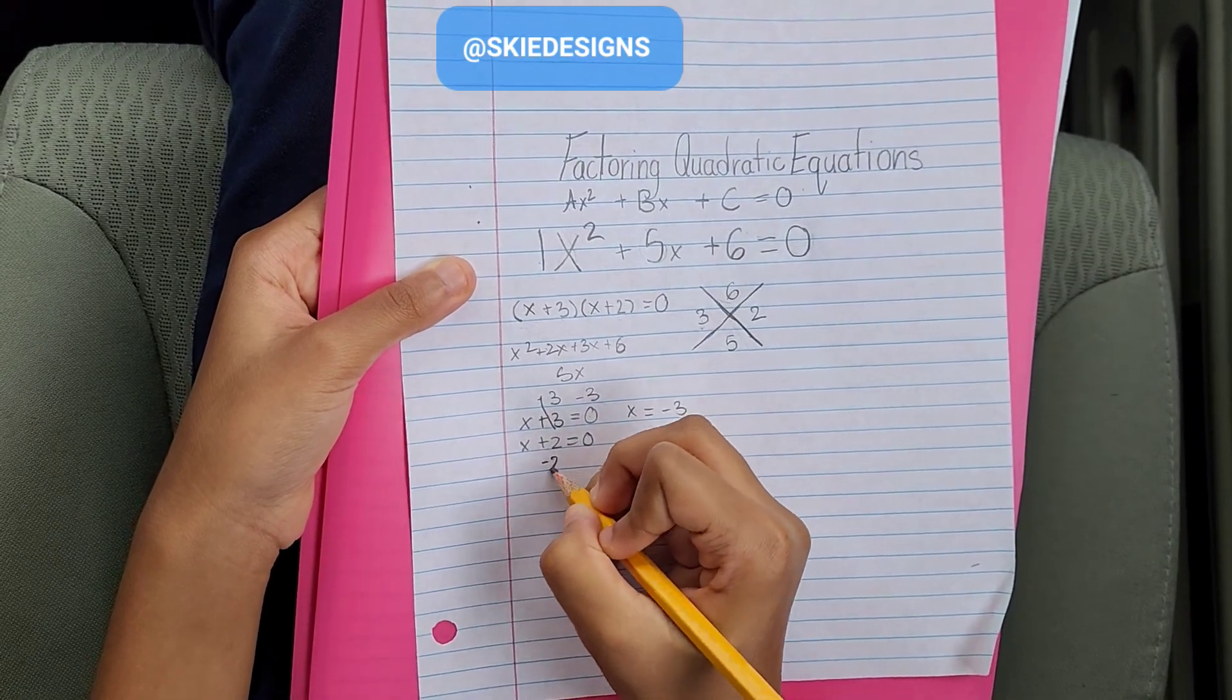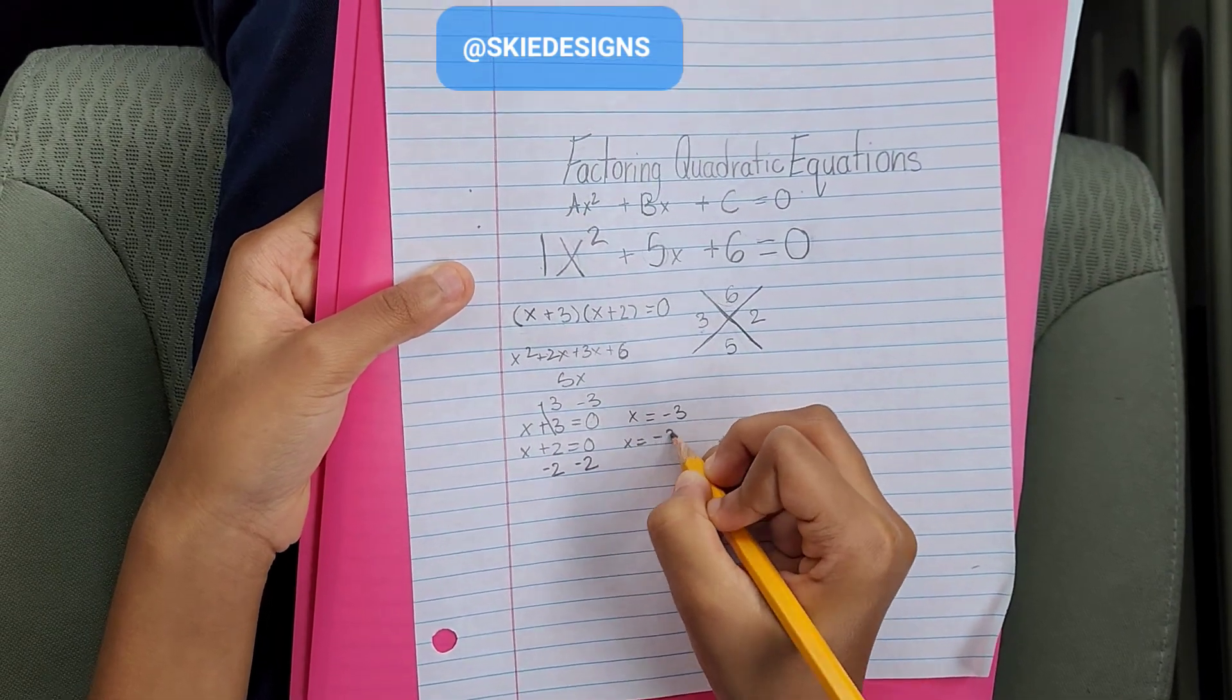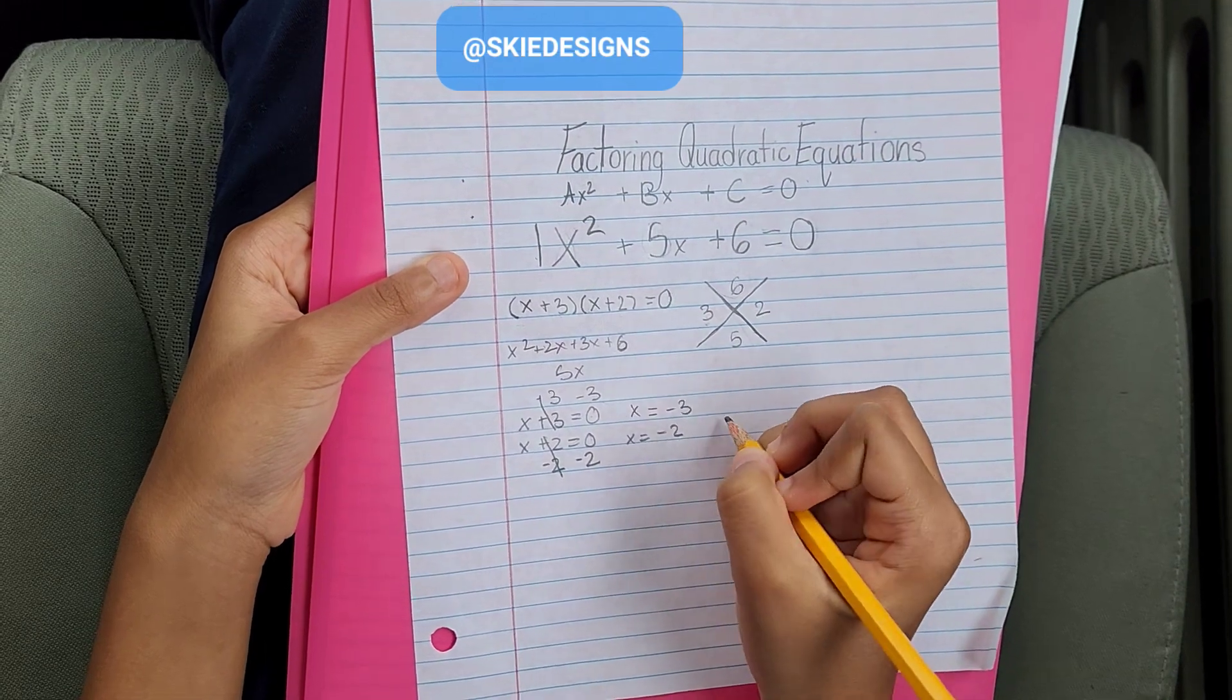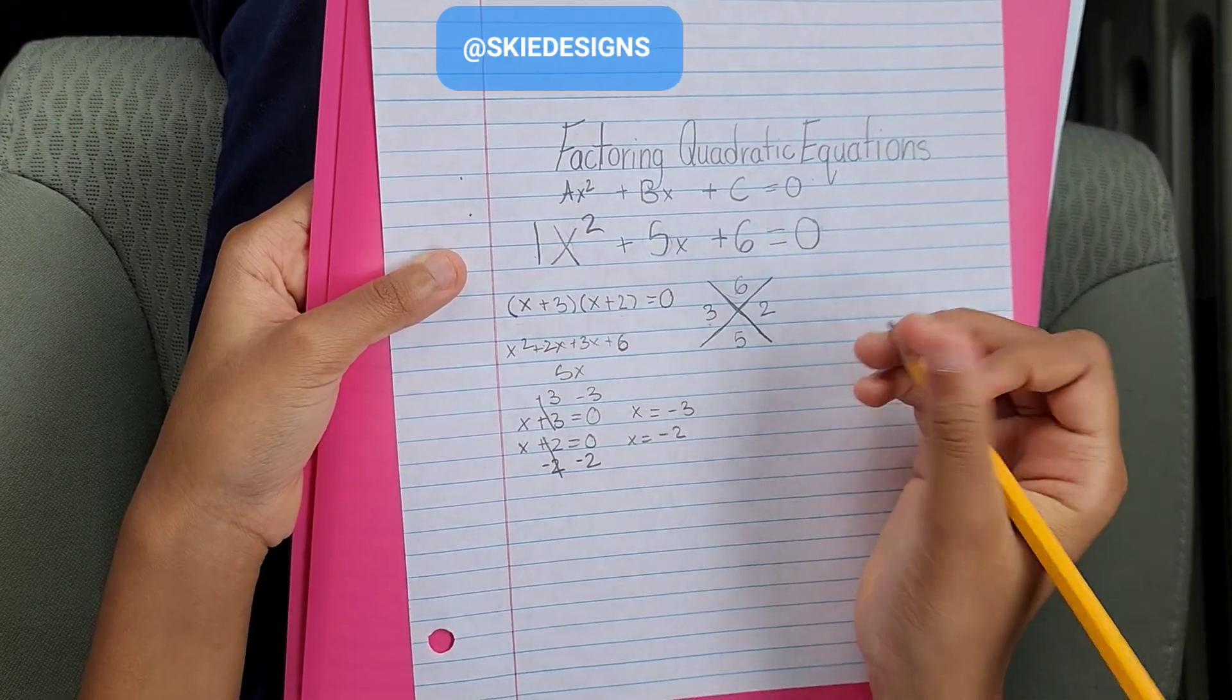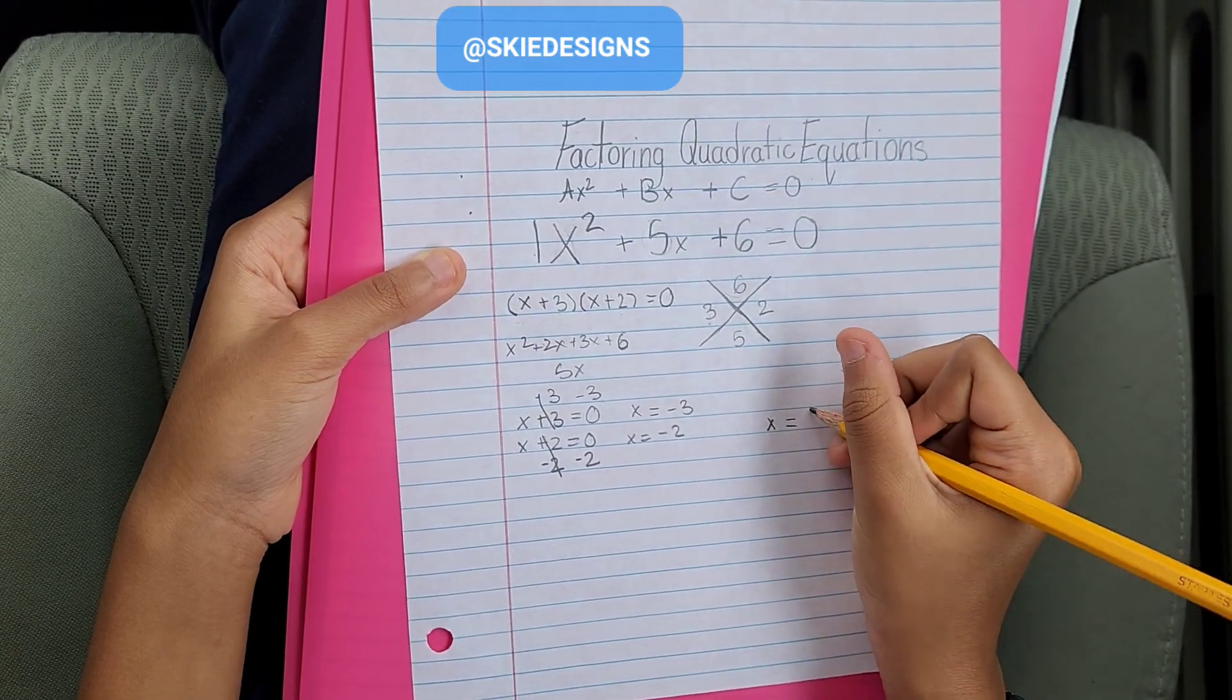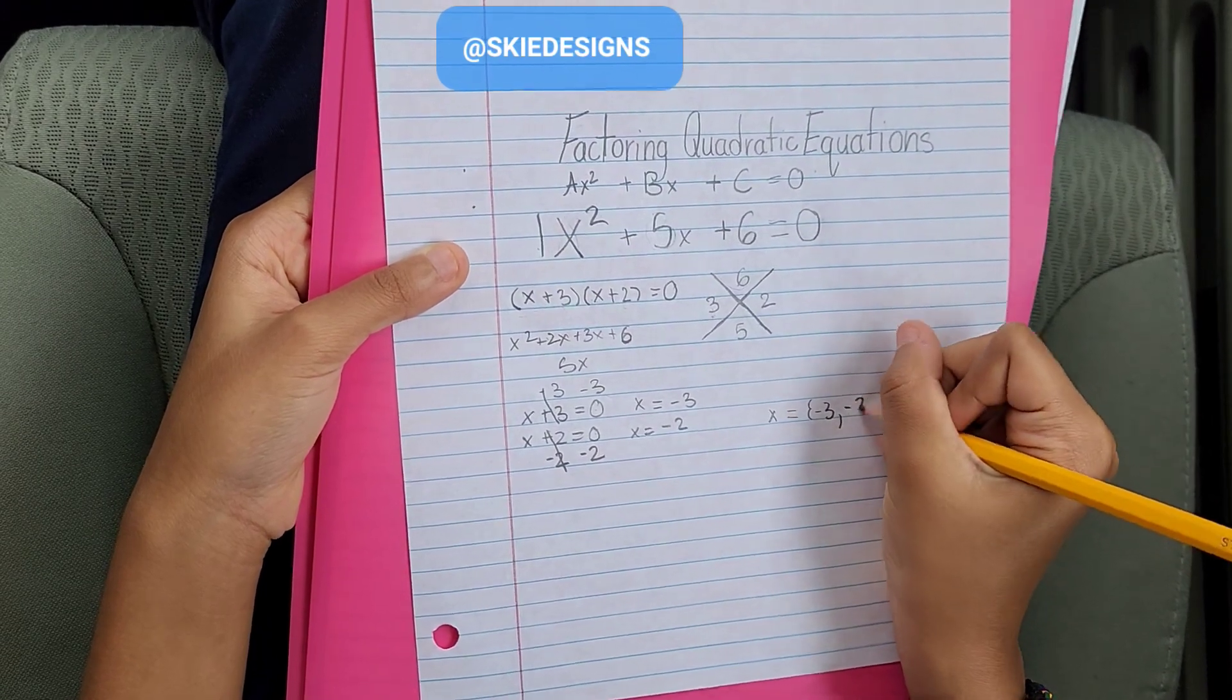We do the same thing here. We subtract 2 from here, and we subtract 2 from here, which gives us x is equal to negative 2, because this cancels out, so we have 0 minus 2, which gives us negative 2. So, our two possible x values would be x is equal to negative 3, or negative 2.